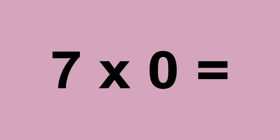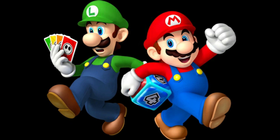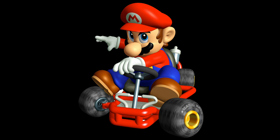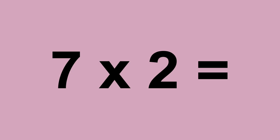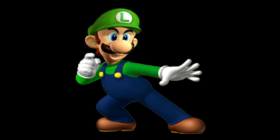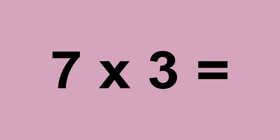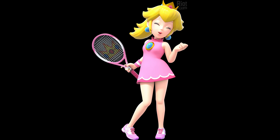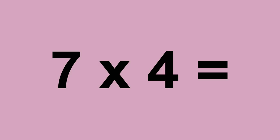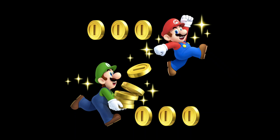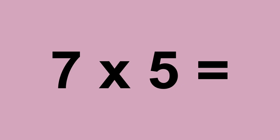7 times 0 equals 0. 7 times 1 equals 7. 7 times 2 equals 14. 7 times 3 equals 21. 7 times 4 equals 28. 7 times 5 equals 35.